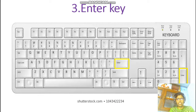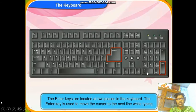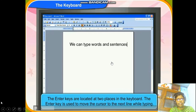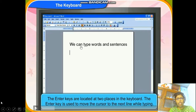The next type of key is the Enter key. Enter keys are used to bring the cursor to the next line on a monitor. The keyboard has two Enter keys — one here and one on the right side. The blinking line you see on the screen is called the cursor. We can type words and sentences, and when moving to the next line, it is done through the Enter key.